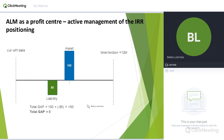Here we see an example of IRRBB positioning for active management of interest rate risk exposure of a bank on the short part of the curve. The gapping period horizon is 12 months. The total gap, which is asset minus liabilities, is positive. This means that if rates go up, there will be a positive impact on P&L, and conversely, if rates go down, there will be a negative impact on P&L.